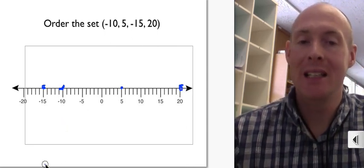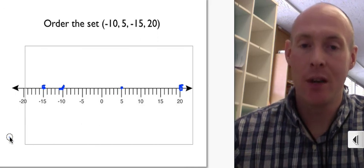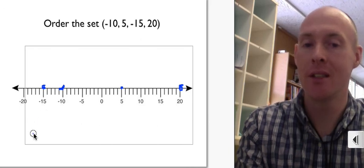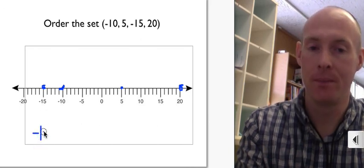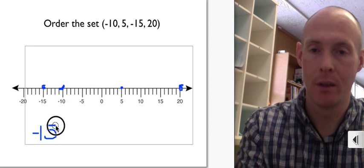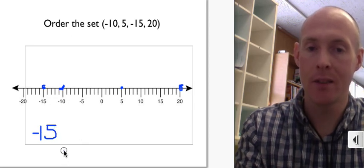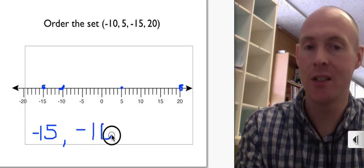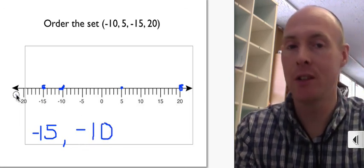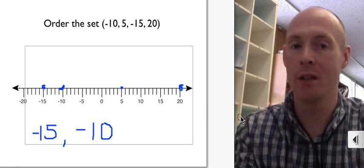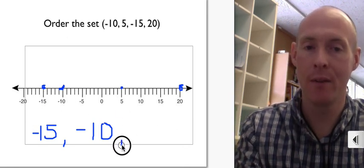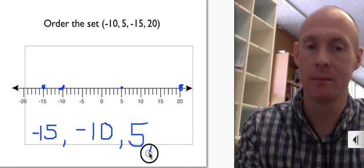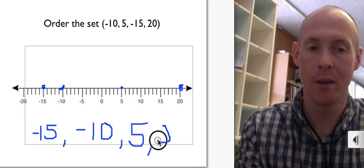So we have to put these in order from least to greatest. So what number is the least? Well, the least is negative 15. Up next, negative 10. Notice, when I'm doing least to greatest, what I'm doing is I'm just starting at the far left, and I'm going to work my way to the right. The next one up is 5. And the last or the greatest number is 20.